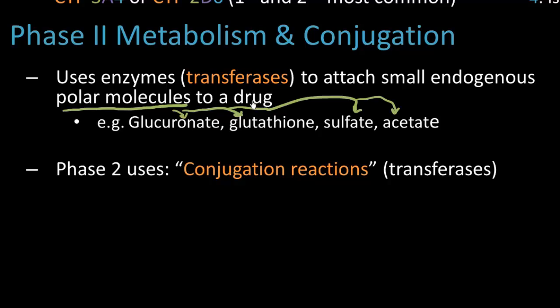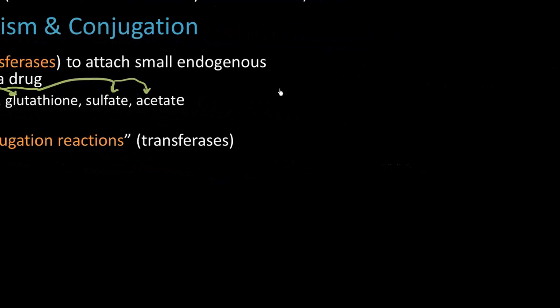The product as a result is called a conjugate. So let's just draw a picture of what's going on here so you can compare it to the previous example. So if we have a drug, we want to take this drug and form a conjugate.